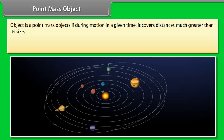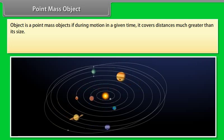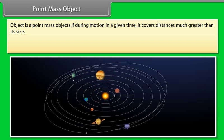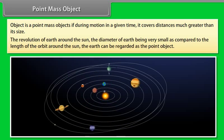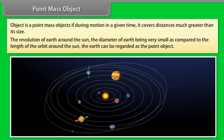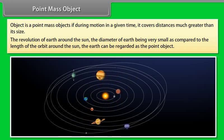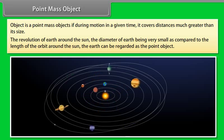Point mass object: An object is a point mass object if, during motion in a given time, it covers distances much greater than its size. For example, in the revolution of the Earth around the Sun, the diameter of the Earth is very small compared to the length of its orbit around the Sun, so the Earth can be regarded as a point object.